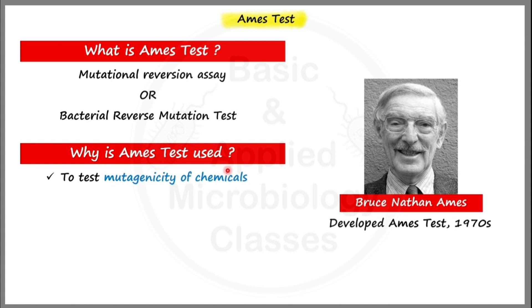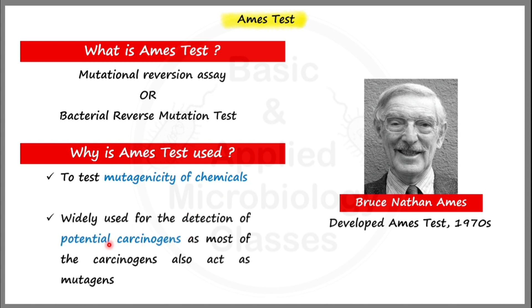We can test that particular drug for mutagenicity by performing the Ames test. The Ames test is most widely used for the detection of potential carcinogens. Carcinogens are chemical substances or agents known to cause different types of cancers. As per literature, around 90% of carcinogenic agents also have mutagenic properties, meaning most carcinogens also act as mutagens.